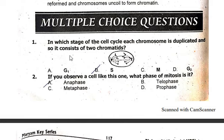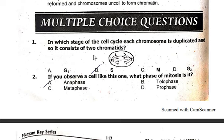These are MCQs that are linked to many books, but the topic is Chapter 5, related to cell cycle. In which stage of cell cycle is each chromosome duplicated so it consists of two chromatids? That is S phase.